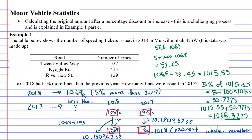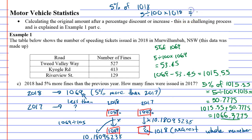That's a lot of working out — we didn't need any of the green working. Let's double-check by taking 5% off 1,018: 5 divided by 100 times 1,018 is about 50.9, approximately 51. If you take 1,018 speeding tickets and add on 51, you get 1,069. Correct!